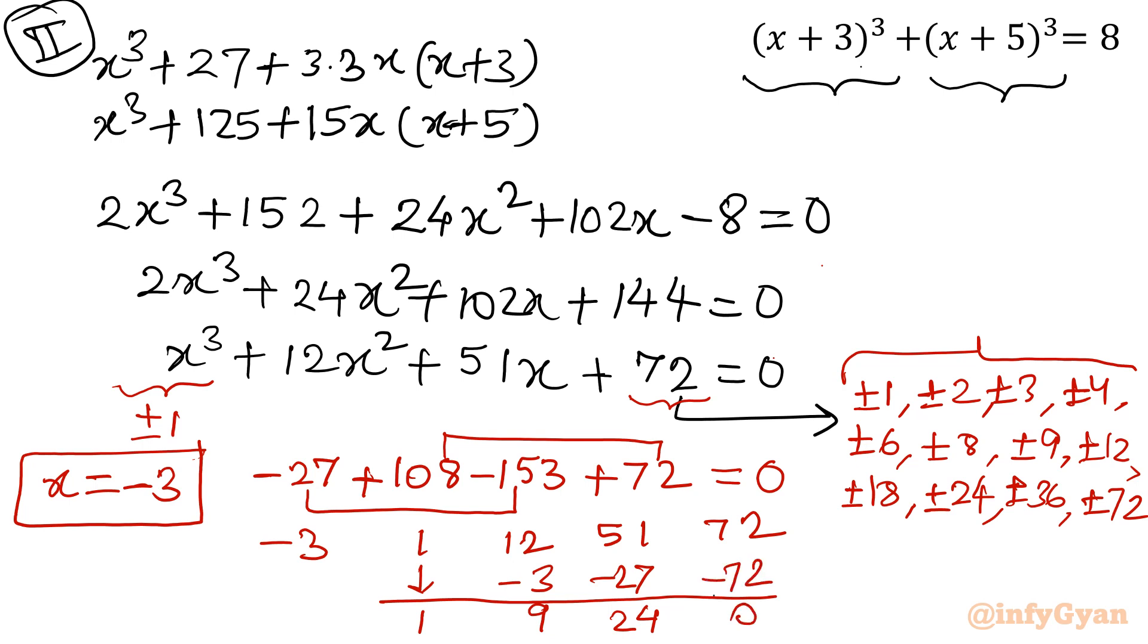So ultimately, what we are getting? x plus 3. Factorization I am talking about. And see, this is one more. Quadratic equation x square plus 9x plus 24. So x equal to minus 3 is obvious solution. x square plus 9x plus 24, we can solve.